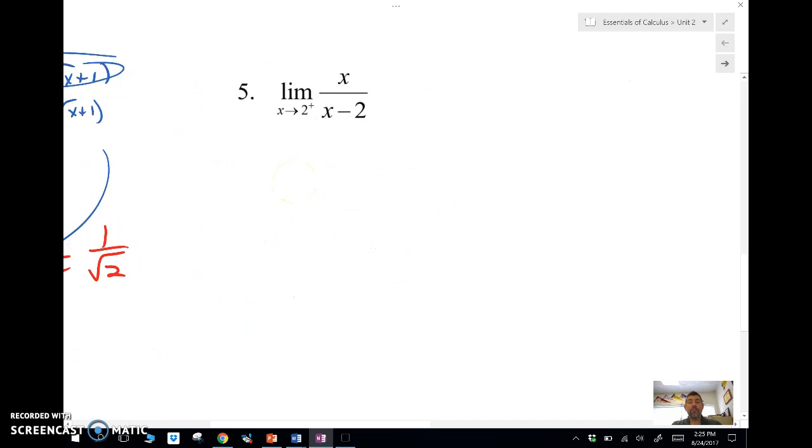Let's take a look at the next one. Limit as X approaches two from the right of X over X minus two. If I plug this in, I'm going to get two over zero. Well, two over zero, anytime I have a limit that has a zero in the denominator, I'm going to either write that as does not exist, or I'm going to write it as infinity or negative infinity. Now I have to decide which one it is.